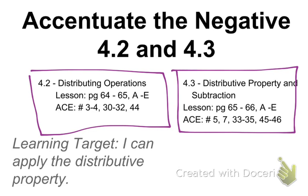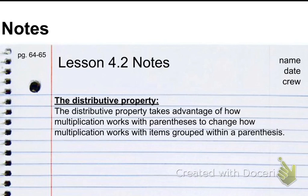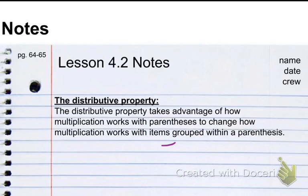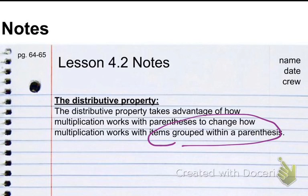Your learning target for this is: I can apply the Distributive Property. The Distributive Property takes advantage of how multiplication works with parentheses to change how multiplication works with items that are grouped within a parentheses. We talked about in Order of Operations how we do what's inside a parentheses first, and that if we group multiplication in different ways, we can sometimes get different answers. Sometimes we can actually shorten the problems by taking advantage of how multiplication works.